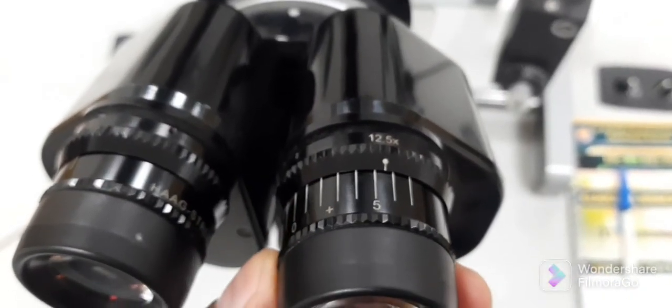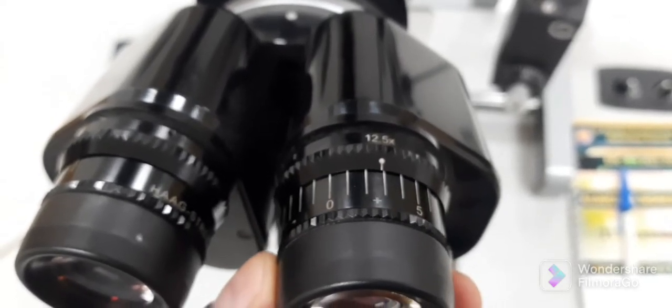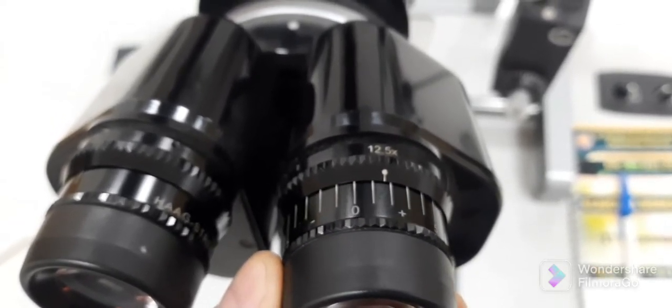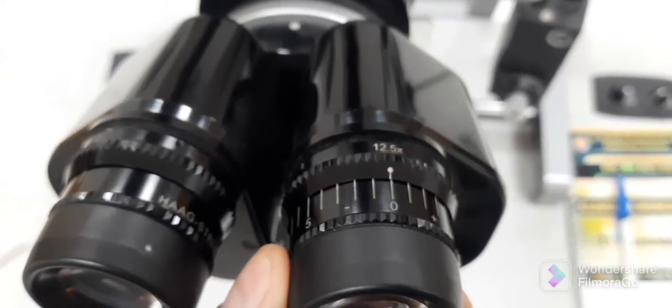Then rotate the knob of eyepiece until the text gets focused. Suppose our examiner is emmetropic, then it will focus on the zero mark. So the target text through the eyepiece gets focused as we rotate the eyepiece knob towards the zero, because our examiner is emmetropic, so it gets crisp and clear towards the zero mark which is the final position.